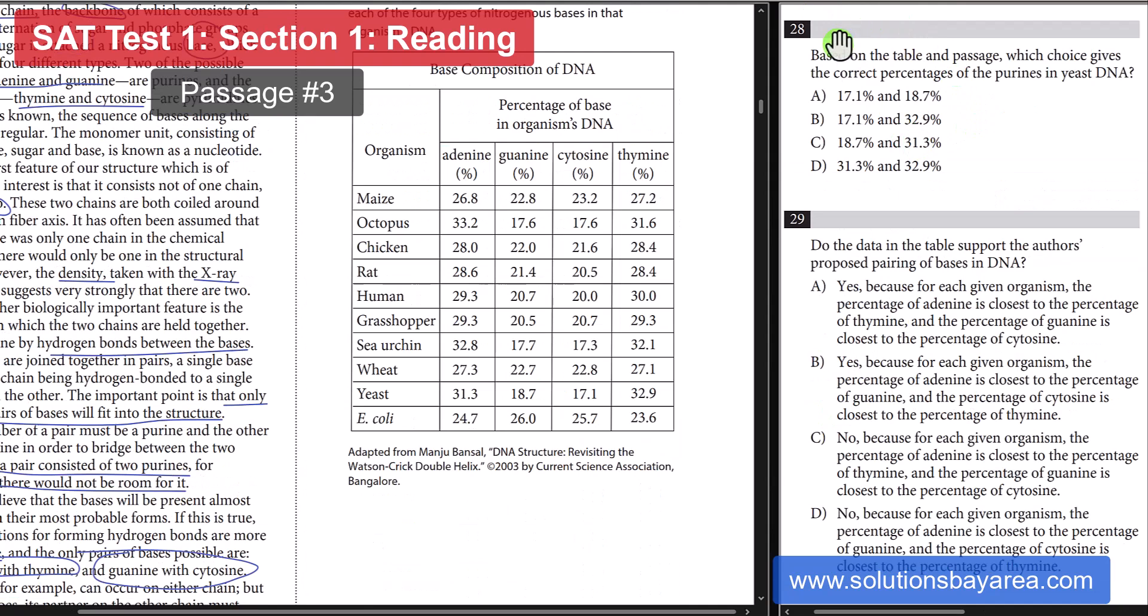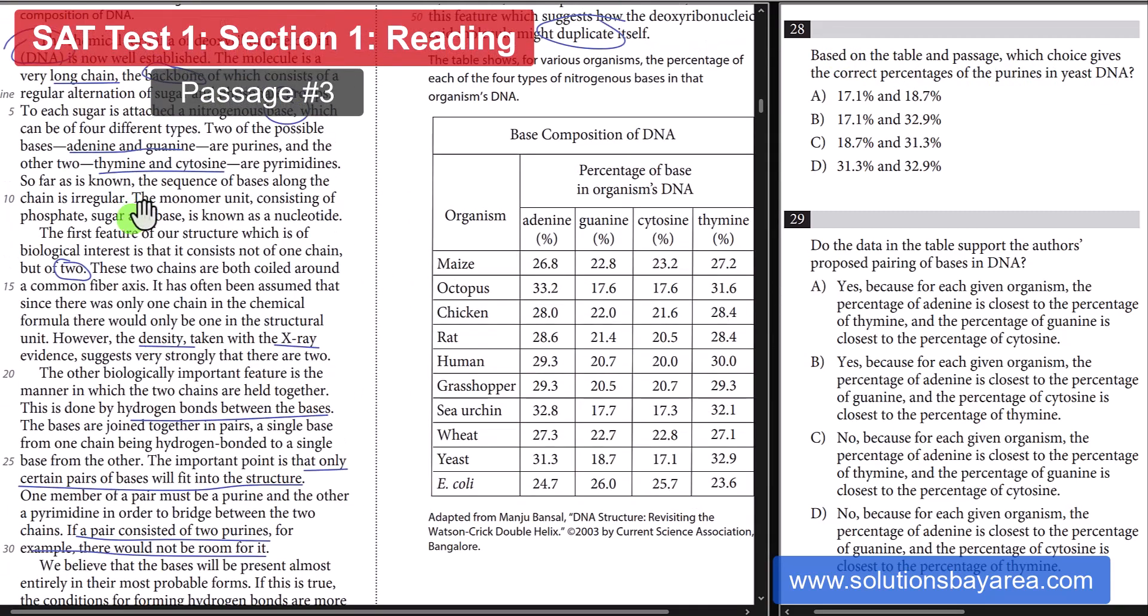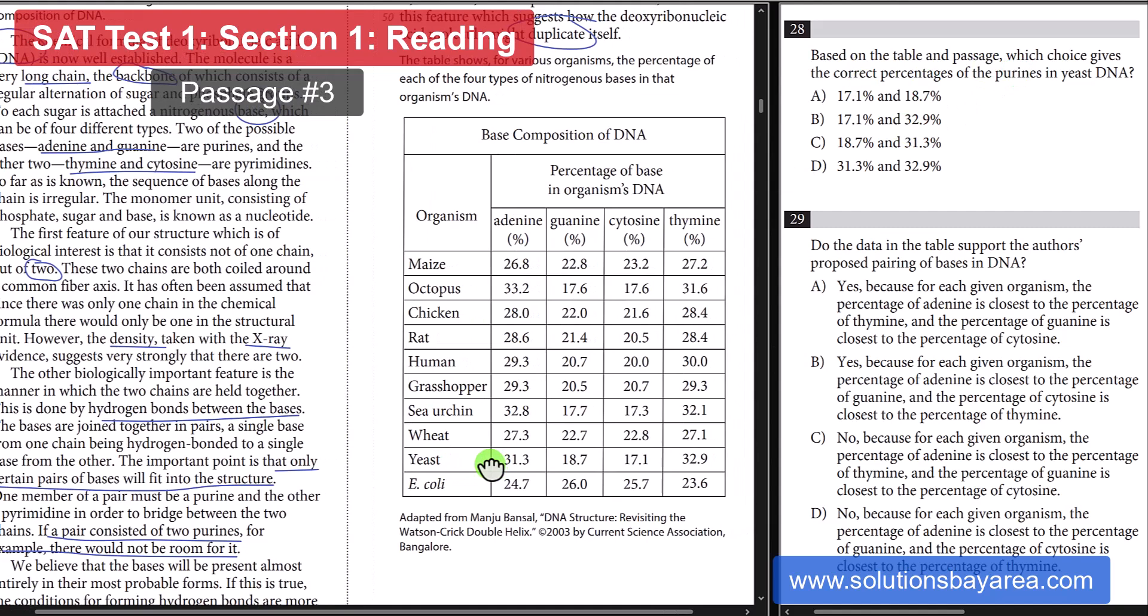28. Based on a table, what gives the correct percentages of the purines in yeast DNA? If you go back to the passage, the purines are adenine and guanine. The pyrimidines are thymine and cytosine. So, they are talking about the purines of yeast DNA. Looking at this table right here, we're looking at the adenine and the guanine. So, we're looking at 31.3 and 18.7. That is going to get you choice C right here.